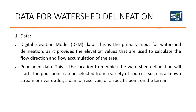You also need your pour point data, which you can create using the ArcGIS Pro software. The pour point is the location from which the watershed delineation will start. The pour point can be selected from a variety of sources such as a known stream or river outlet, a dam or reservoir, or a specific point on the terrain. It is the outlet where you, the analyst, want to know the area of the watershed.